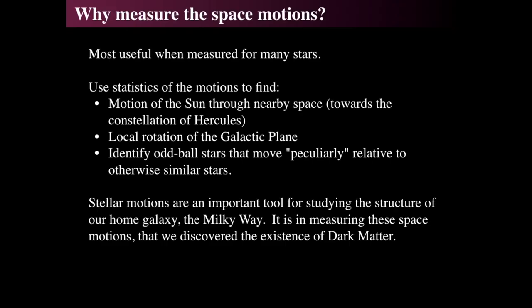Why would we bother doing all this? Because it's called astrometry and is incredibly useful for astronomy. When we can actually find true space velocities, we can find how the Sun is moving through space — it seems to be moving towards the constellation of Hercules. We can also take large-scale measurements of stellar motions in our galaxy.